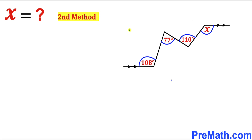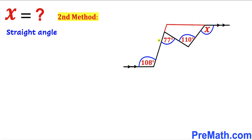Here is our very first step of the second method. We are going to draw some auxiliary lines. As you can see in this next diagram, I have extended this line and I have extended this line as well, such that they meet each other over here.